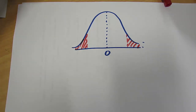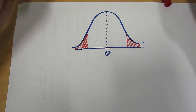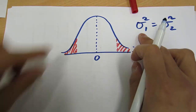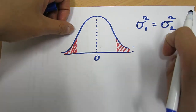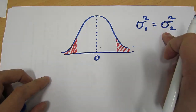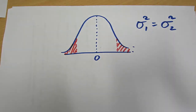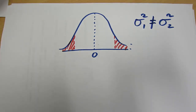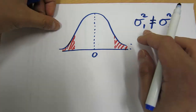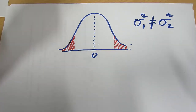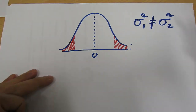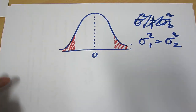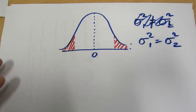If we can assume that both samples have the same population variance — that is, the population variance of population one equals the population variance of population two — then we can use simpler calculations. If this doesn't hold, we'll have to use more complicated calculations. There's a formal test for this called the F-test for equal variances, which we won't get into today. For simplicity, let's first assume that the two population variances are equal, and then I'll show you the other case.